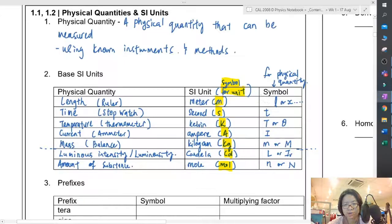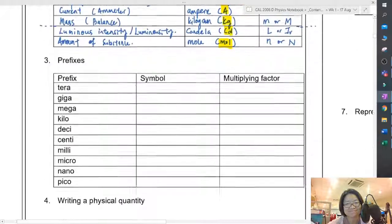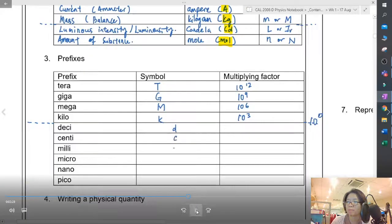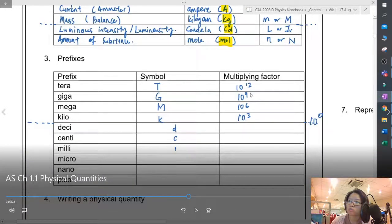Whenever we look at prefixes, we use them for bigger numbers like 10 to the power of 3, 6, 9, and 12. The symbols will be T, G, M, and lowercase k. If you notice, all the multiples are in terms of 3 - times 3, then times another 3 is 6, times another 3 is 9, and another 3 is 12.